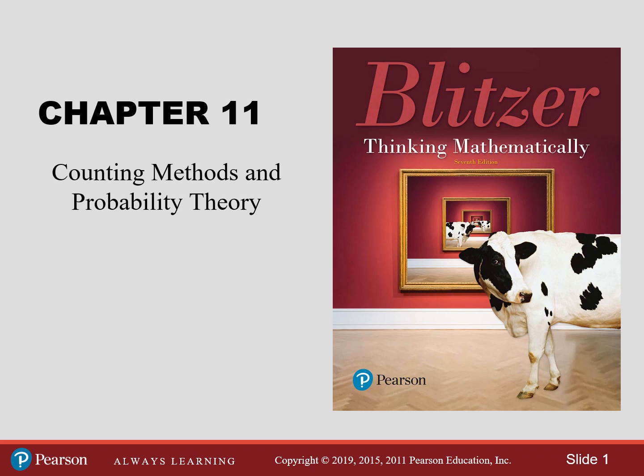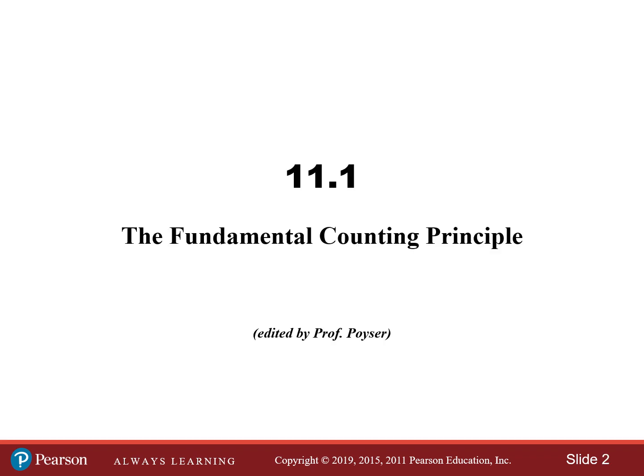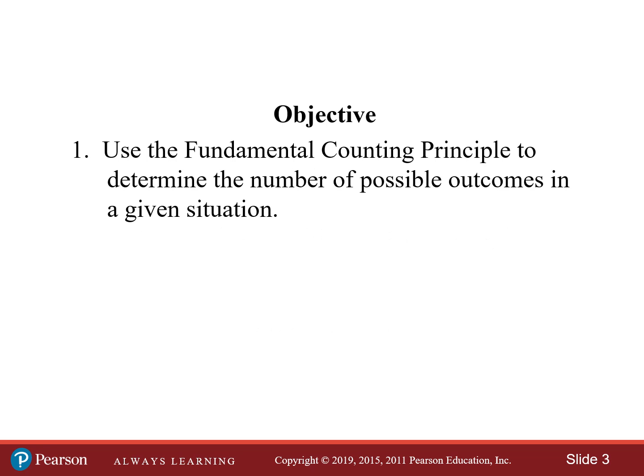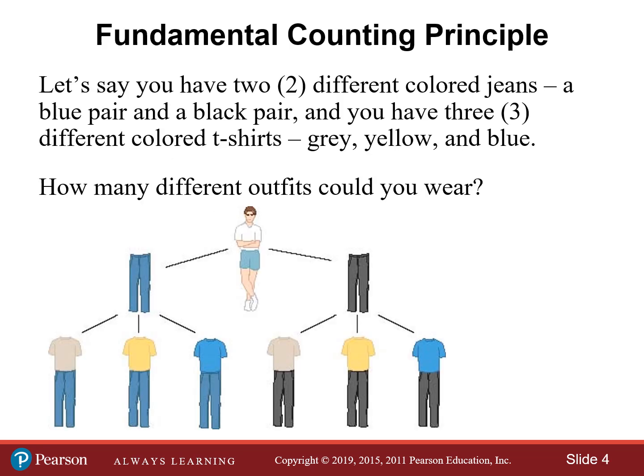This video covers chapter 11 in the textbook, and in particular section 1 called the Fundamental Counting Principle. The objective of this video is to use the fundamental counting principle to determine the number of possible outcomes in a given situation. I'm going to show you lots of different examples, some of which are taken straight out of your workbook.